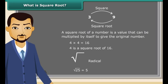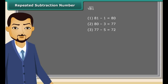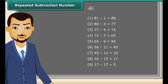We can find the square root of a given number using the repeated subtraction method. It is really easy. Consider the square root of 81 — just subtract successive odd numbers from 81 starting from 1 until the difference becomes 0. You will notice it took 9 steps to get the difference as 0, therefore the square root of 81 is 9.